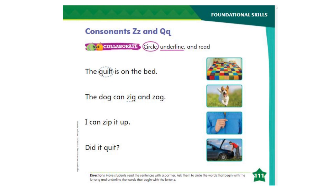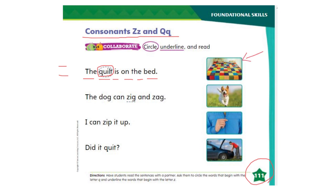Okay everybody, now it's time to do some work in our books. Open your My View K3 books on page 111 for consonant Z and Q. Here we have some sentences. In each sentence you will circle the words that begin with Qu and underline the words that begin with Z. Let's read the first sentence together: the quilt is on the bed. The word quilt begins with Qu, so we circle it. If we look at the picture we see a nice quilt which is on the bed.